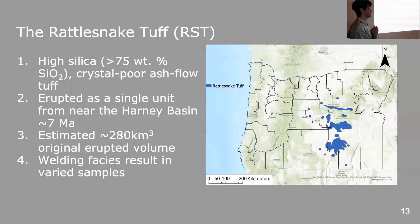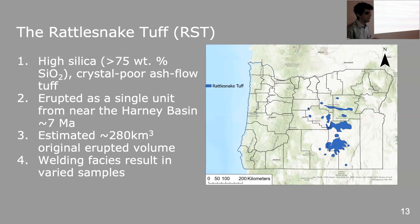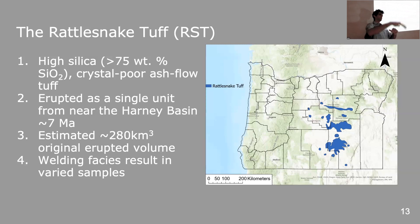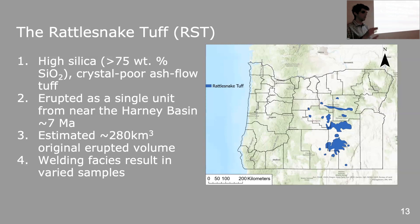So what did I do? I sampled volcanic glass from the Rattlesnake Tuff, which is a high-silica rhyolitic ash flow tuff that erupted from around the Harney Basin about 7 million years ago. It erupted as a single unit and cooled as a single unit, which means it forms really spectacular, huge blocky outcrops, often at the tops of ridges. It was a very large eruption — somewhere between 280 to maybe even 300 cubic kilometers of material were erupted very quickly. The tuff has varied levels of welding as you move through the outcrop, which result in varied samples and varied outcrops.